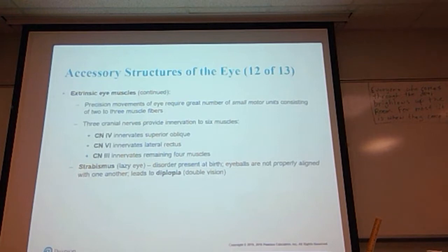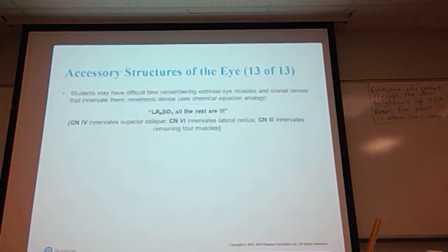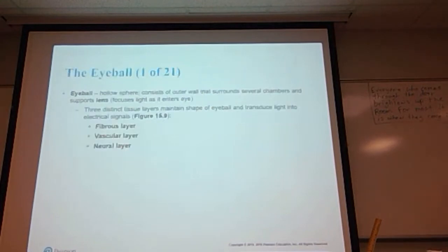A condition known as strabismus or lazy eye is a disorder present at birth where the eyeballs are not properly aligned with one another. This kind of condition leads to diplopia, which is the clinical term for double vision—everything seems to have a sort of a shadow image. One of those helpful hints: if you remember LR6, SO4, all the rest are three, which means the superior oblique muscle is cranial nerve four, the lateral rectus muscle is cranial nerve six, all the rest of the muscles are cranial nerve three.